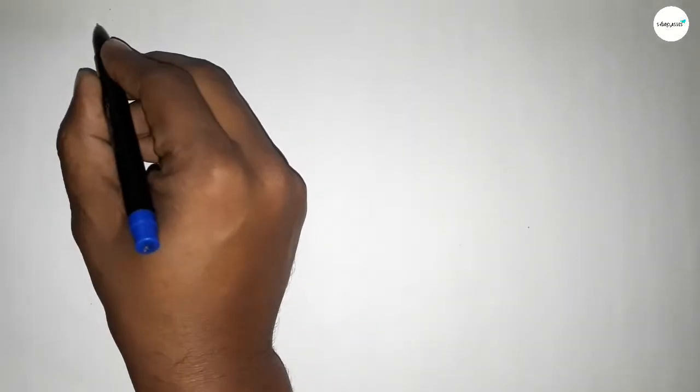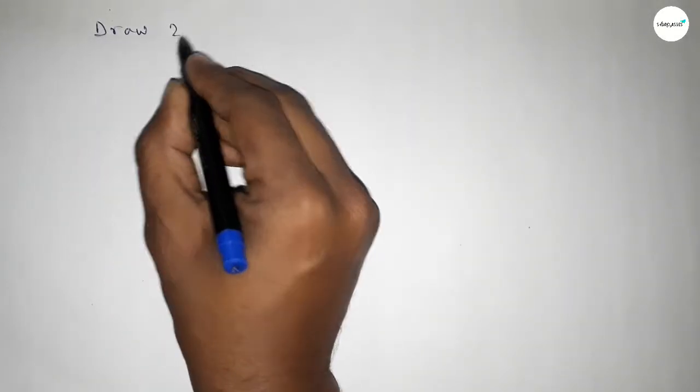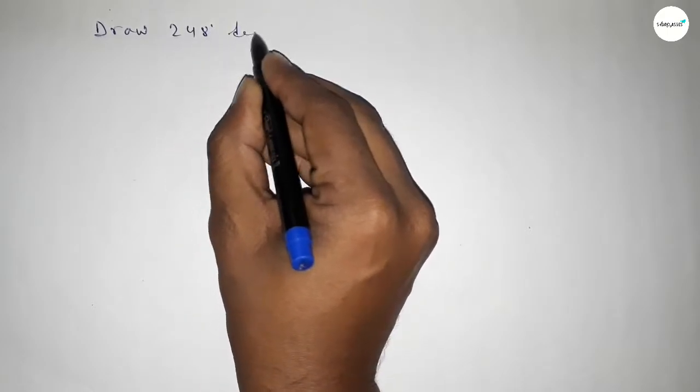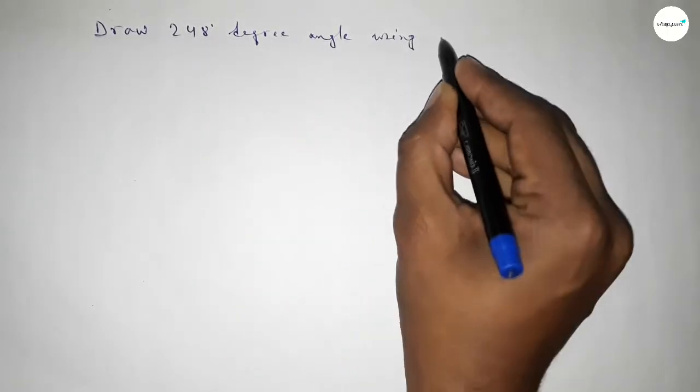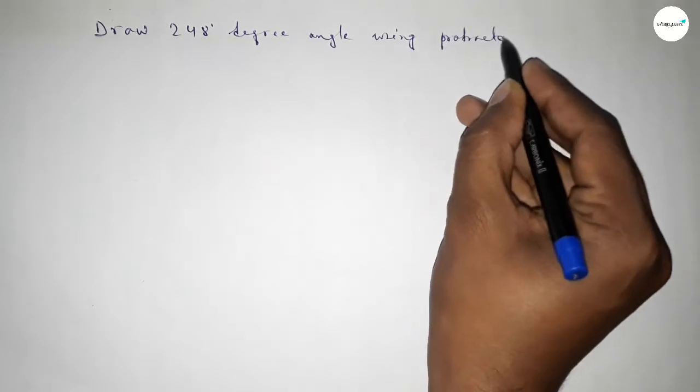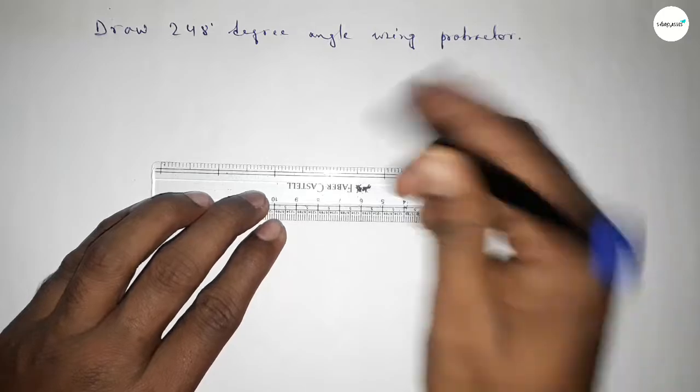Hi everyone, welcome to SI Share Classes. Today in this video we have to draw a 248-degree angle using a protractor. So let's start the video. First of all, we have to draw here a line of any length and take point B and here C.